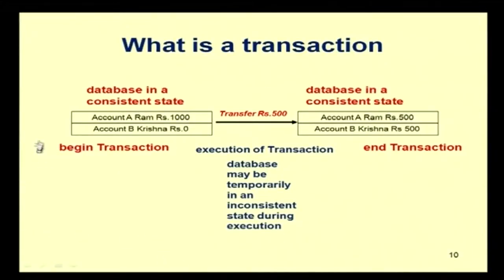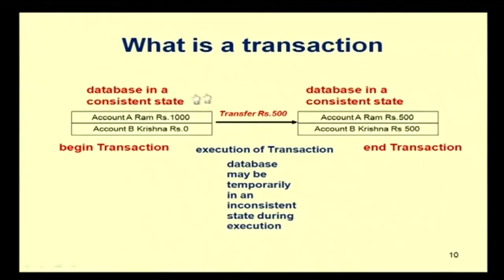Let us look at this with an example. You have a database where account A belonging to Ram has 1000 rupees and account B belonging to Krishna has 0 rupees — this is the consistent state before the transaction. The transaction transfers 500 rupees, and at the end, account A of Ram should have 500 and account B of Krishna should have 500.